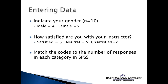We then match the codes we've determined to the number of responses collected. Male is code one and female is code two. So in the case of gender, we'd have four number ones and five number twos under the gender column. For satisfaction, using a code of one for satisfied, two for neutral, and three for unsatisfied, there'd be three number ones, five number twos, and two number threes entered into SPSS.